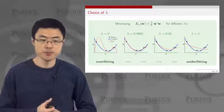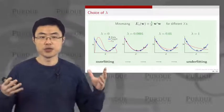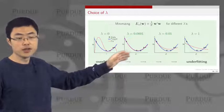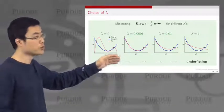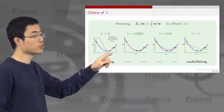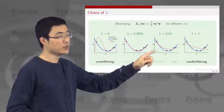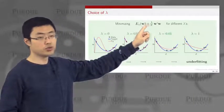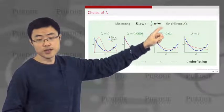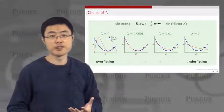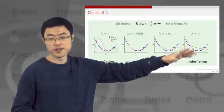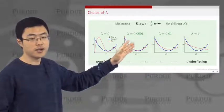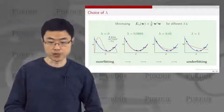In both minimization problems, there is a parameter lambda to control. If lambda is too small, overfitting remains. If lambda is too large, you over-penalize and force very small weights, leading to underfitting. The optimal lambda star must be found through a technique called validation, which will be introduced in the next lecture.